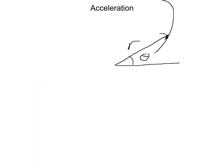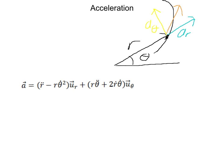Now we have acceleration in polar coordinates — again with our radial and transverse components. The radial component of acceleration, a_r, equals r-double-dot minus r times theta-dot squared. The transverse component, a_theta, equals r times theta-double-dot plus 2 times r-dot times theta-dot.